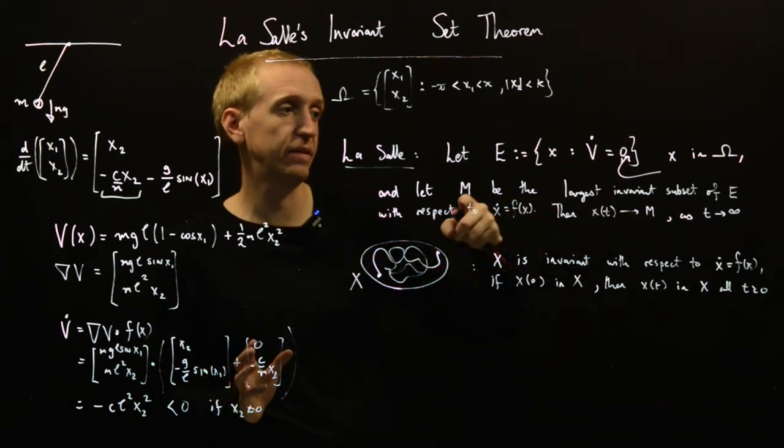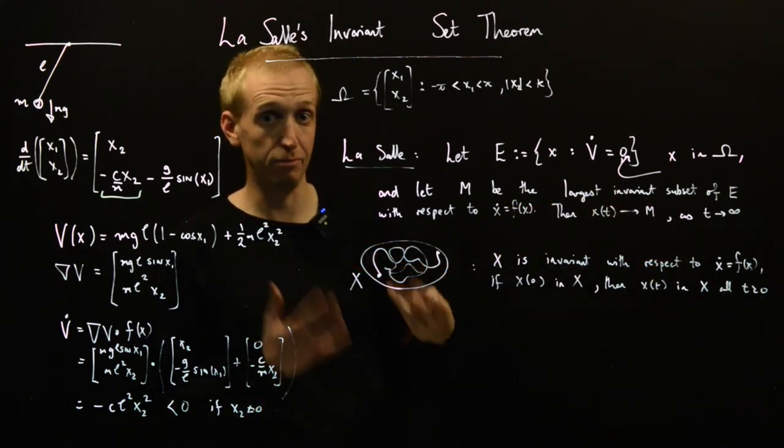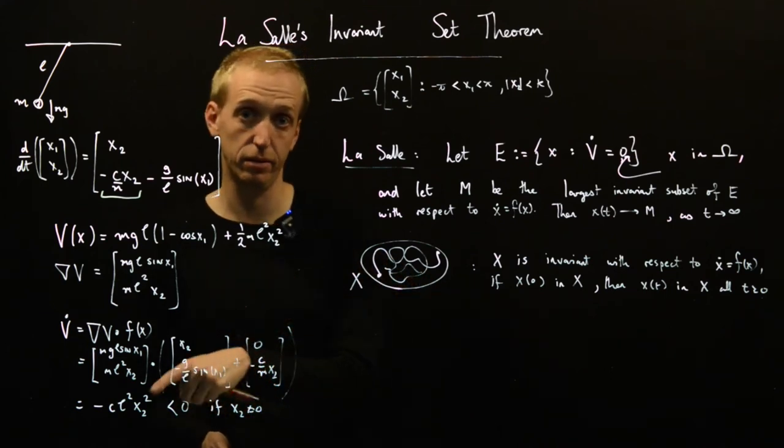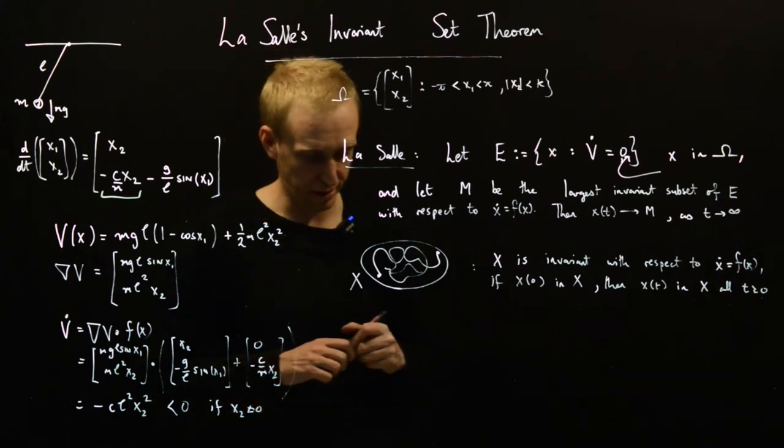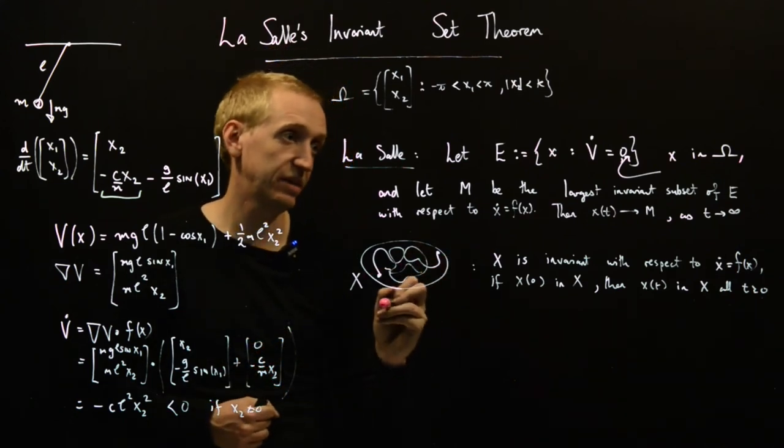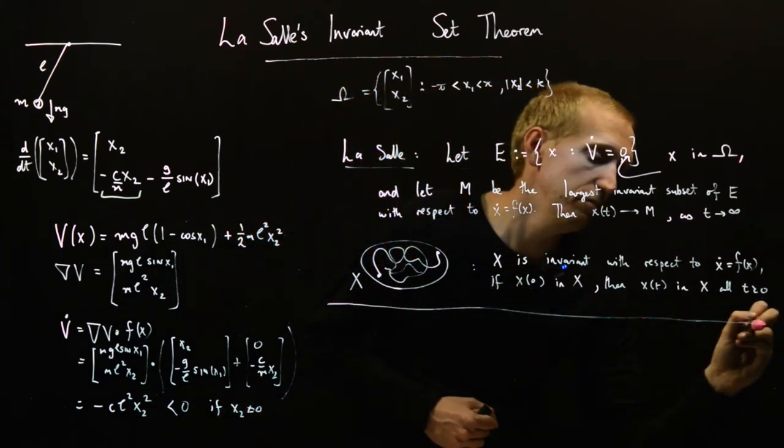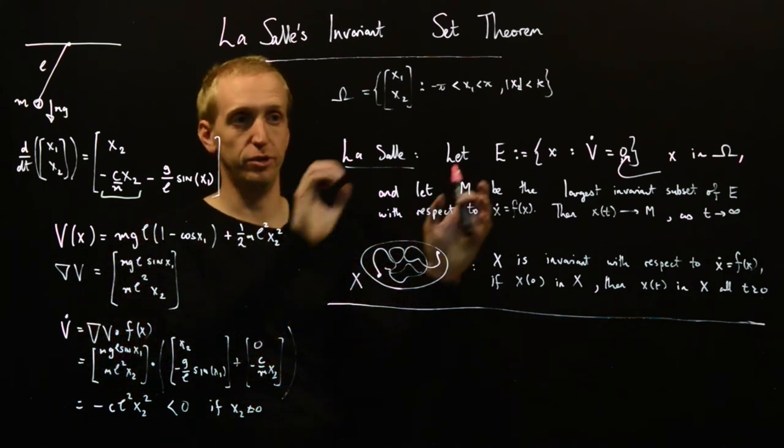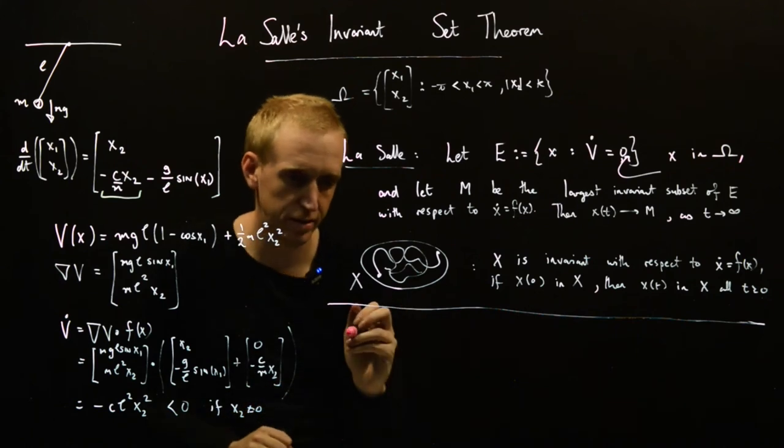What we can do is we can use the LaSalle Invariant Set Theorem to show that this set M is just equal to the equilibrium point. And then if that's the case, the LaSalle Invariant Set Theorem will tell us that we tend to that set M. And if that set M happens to be our equilibrium point, then we manage to prove asymptotic stability without having strict inequality on V dot everywhere. And let's just do that in the context of our example, just to explain what all of this means.